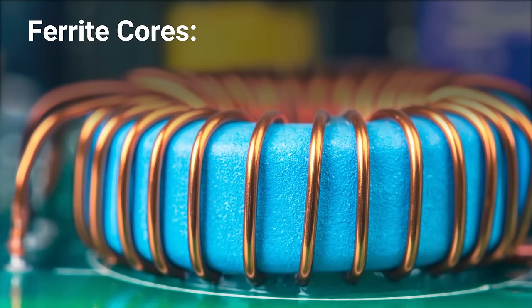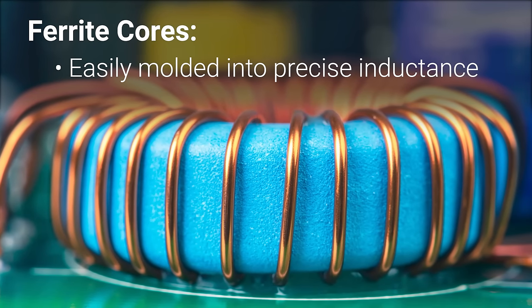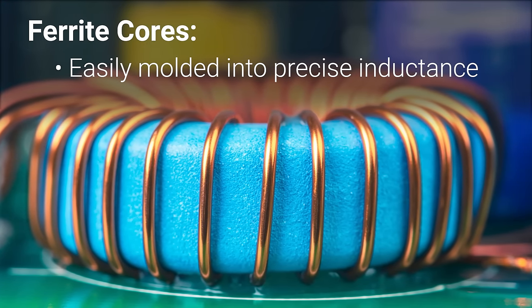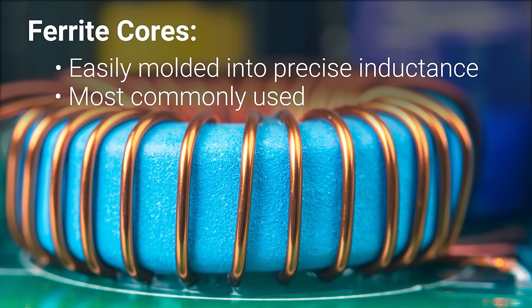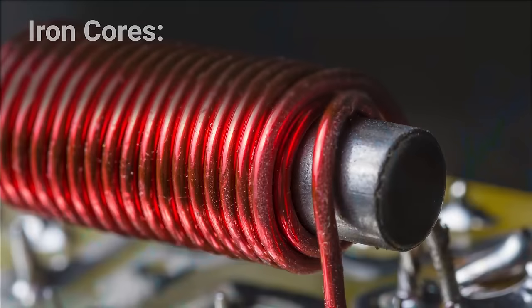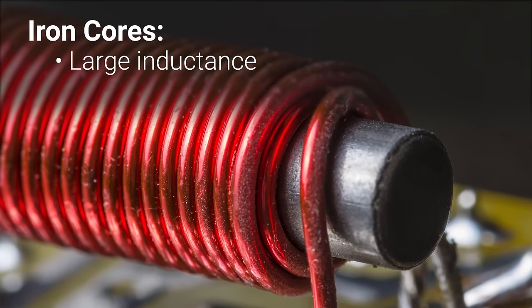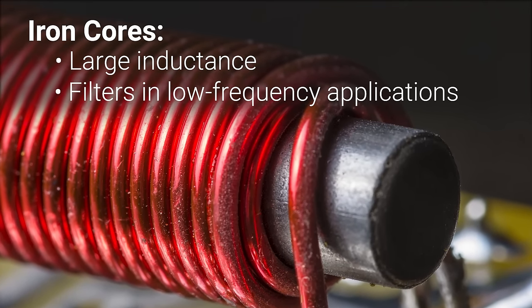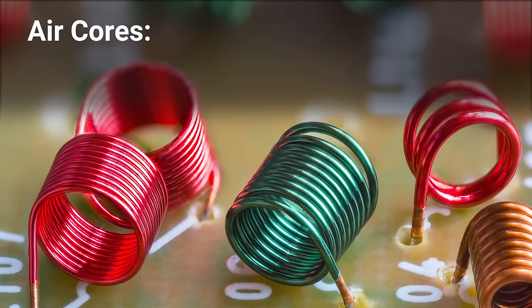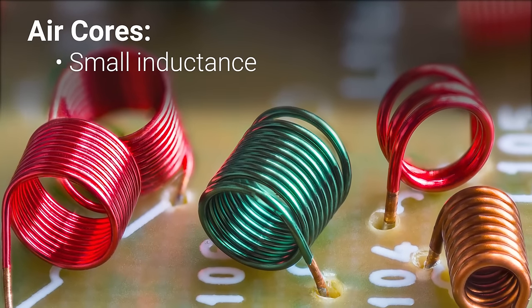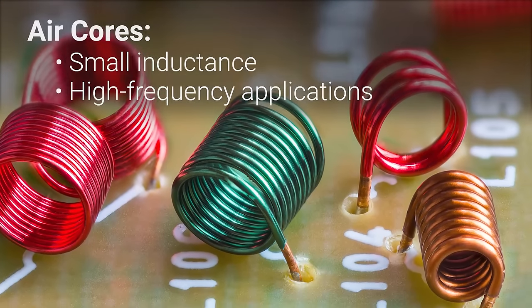Ferrite cores are easily molded into precise inductance needs and are the most commonly used core type. Iron cores provide a large inductance and are often used as filters in low frequency applications. Air cores provide a small inductance and are typically found in high frequency applications.